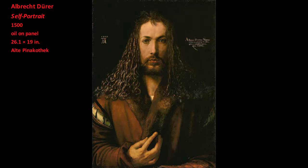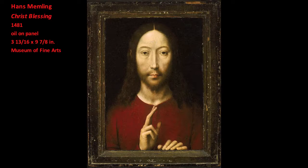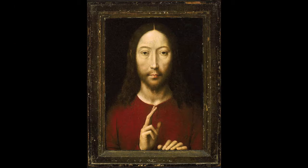In 1500, Dürer painted one of the most famous self-portraits in the history of art. Scholars generally agree that Dürer deliberately employed this idealized, frontal, and symmetrical view of his face in order to resemble depictions of Christ. An image of the blessing Christ, such as this work by Hans Memling, served as Dürer's inspiration. This type of devotional image was very popular in 15th century northern European art.